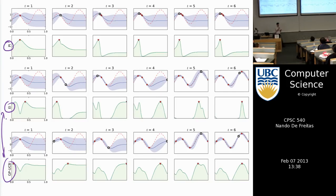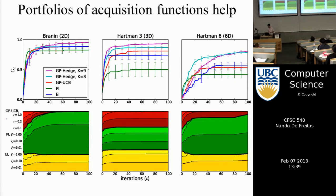In some cases — like when you have Bernoulli variables such as independent arms when displaying ads on Facebook, where the reward is whether someone clicked on the ad — Thompson sampling is actually much easier to deploy.